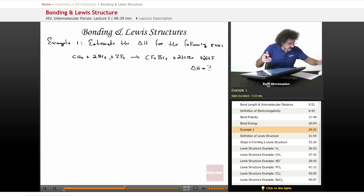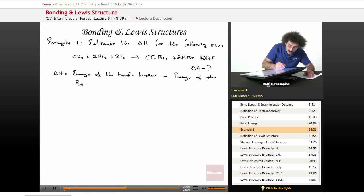So, as it turns out, the delta H is going to be this. The delta H is going to be the energy of the bonds broken, so think about this for a second. It's the energy of the bonds broken minus the energy of the bonds formed.